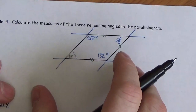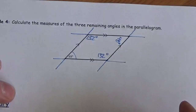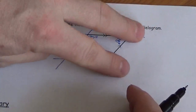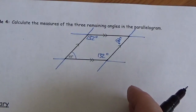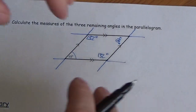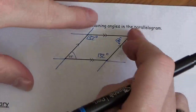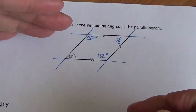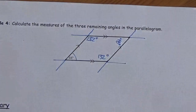Since these two parallel lines have this as their transversal, these two angles must be supplementary, so this angle must also be 132 degrees. With two sets of parallel lines, you just rotate your perspective: for each pair of parallel lines, one line becomes the transversal, and you can work around the whole diagram that way.